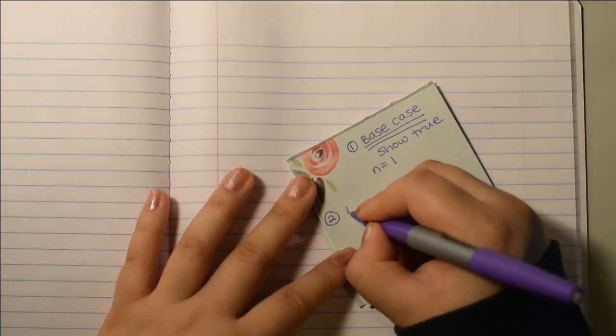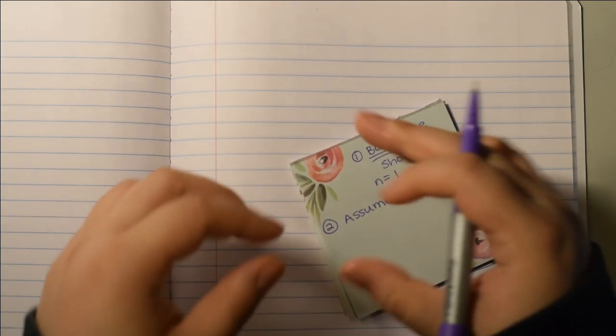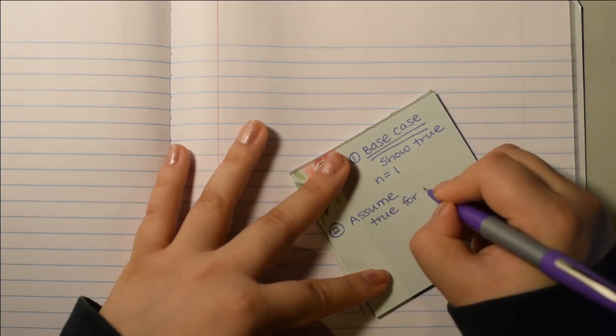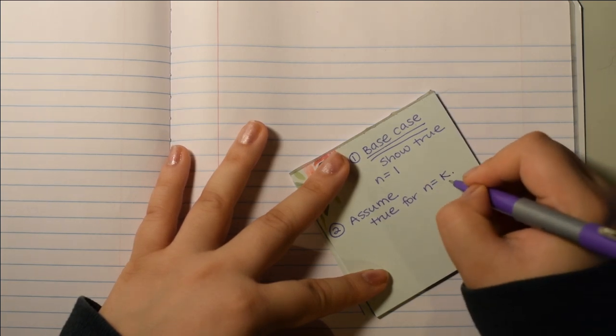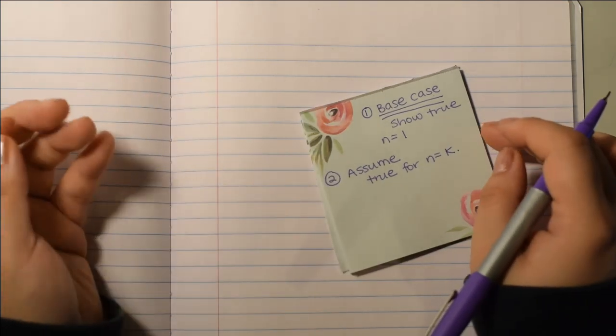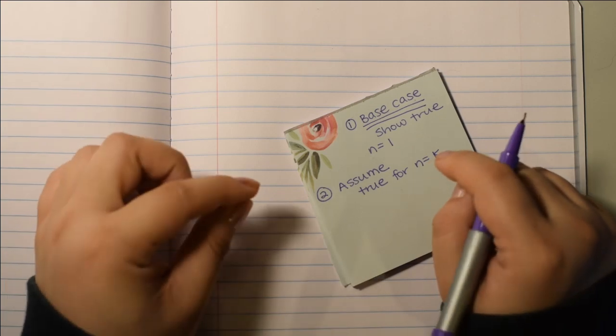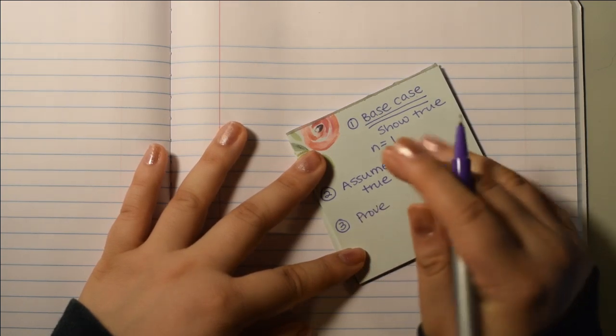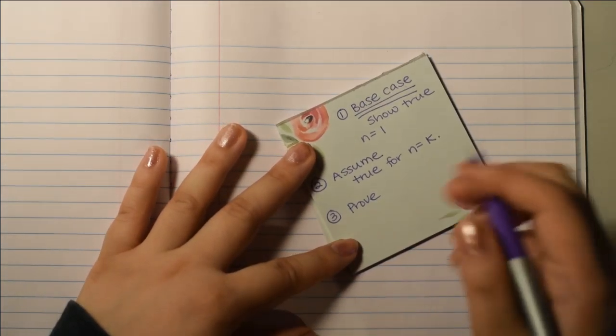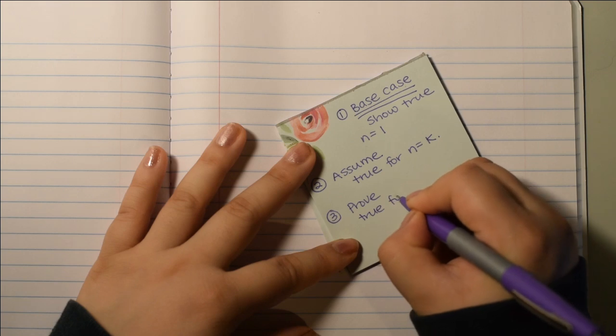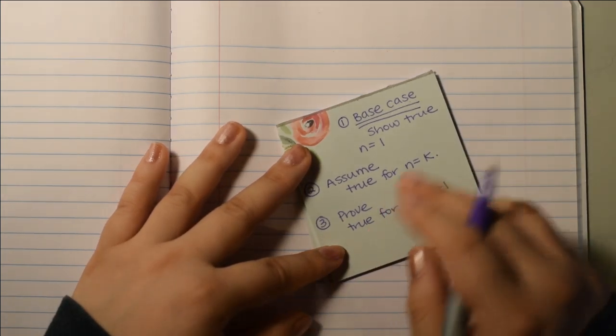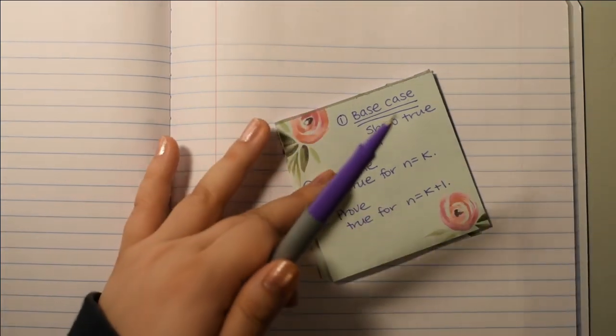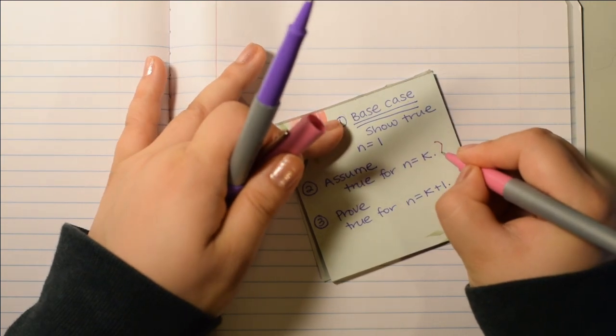And then our step 2 is to assume whatever it is that we're trying to prove is true for n equals k, where k is sort of like a placeholder or index. And step 3 is to prove our statement is therefore true based on our assumption, prove true for n equals k plus 1.